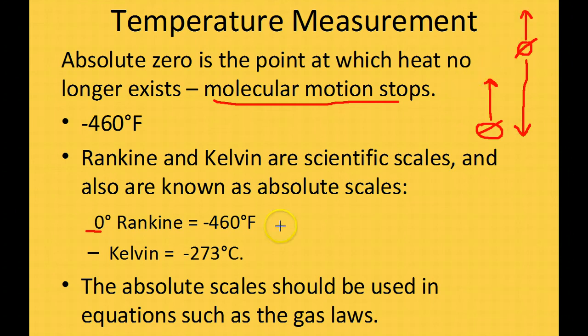Just remember, you're going to have to convert to the absolute scale. It's simple to convert Fahrenheit to Rankine, and they're proportional. If you want to convert from Fahrenheit to Rankine, you add 460 degrees Fahrenheit, and if you want to convert back, you subtract 460 degrees Fahrenheit.